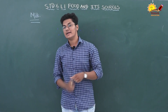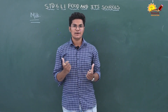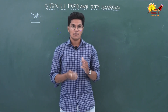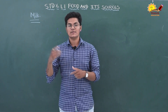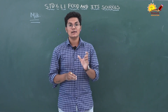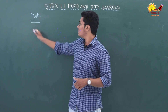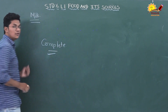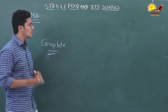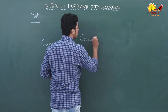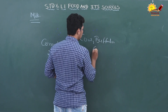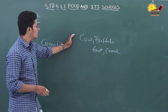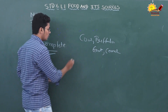First topic is milk. Milk is known as complete food. Why is it known as complete food? Because milk has a mixture of all the nutrients. We will learn about nutrients in our next chapter, but for now remember that nutrients are very important for our body. Milk is known as complete food because it has a mixture of all nutrients. Animals like cow, buffalo, goat, and camel give us milk.